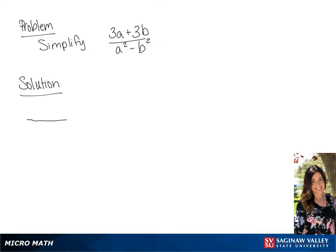We are going to simplify this fraction. We're going to start by factoring the numerator. So we can factor a 3 out, so we have 3 times a plus b.